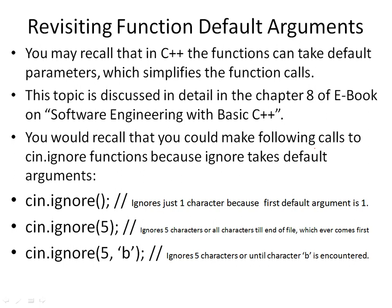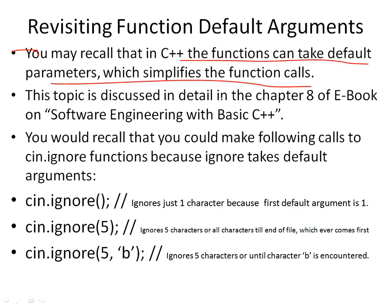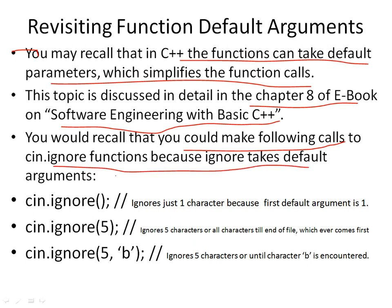Before we do this work we want to talk about default function arguments. You may recall that in C++ functions can take default parameters which simplify the function call. This topic is discussed in chapter 8 of the e-book 'Software Engineering with Basic C++'. You probably remember that you could make the following calls to the ignore function because ignore takes two default arguments.